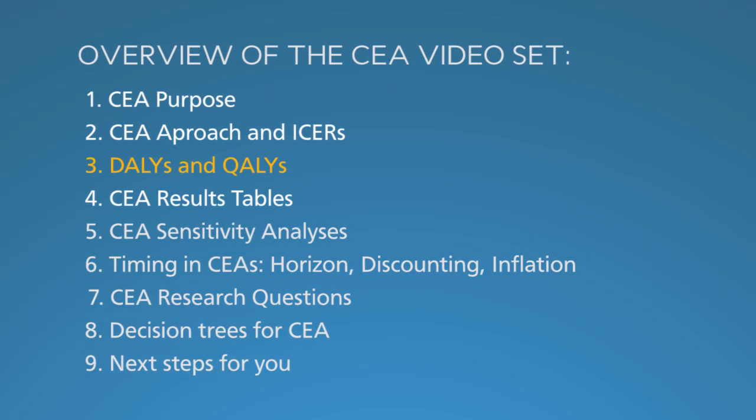In segments number one and two, you learned why to do CEAs, and how to compare net costs to health outcomes, especially disability-adjusted life years, or DALYs, and quality-adjusted life years, or QALYs. In this segment, number three, we dive deep into DALYs to understand how they're calculated and used. We also consider their close cousins, the QALYs.